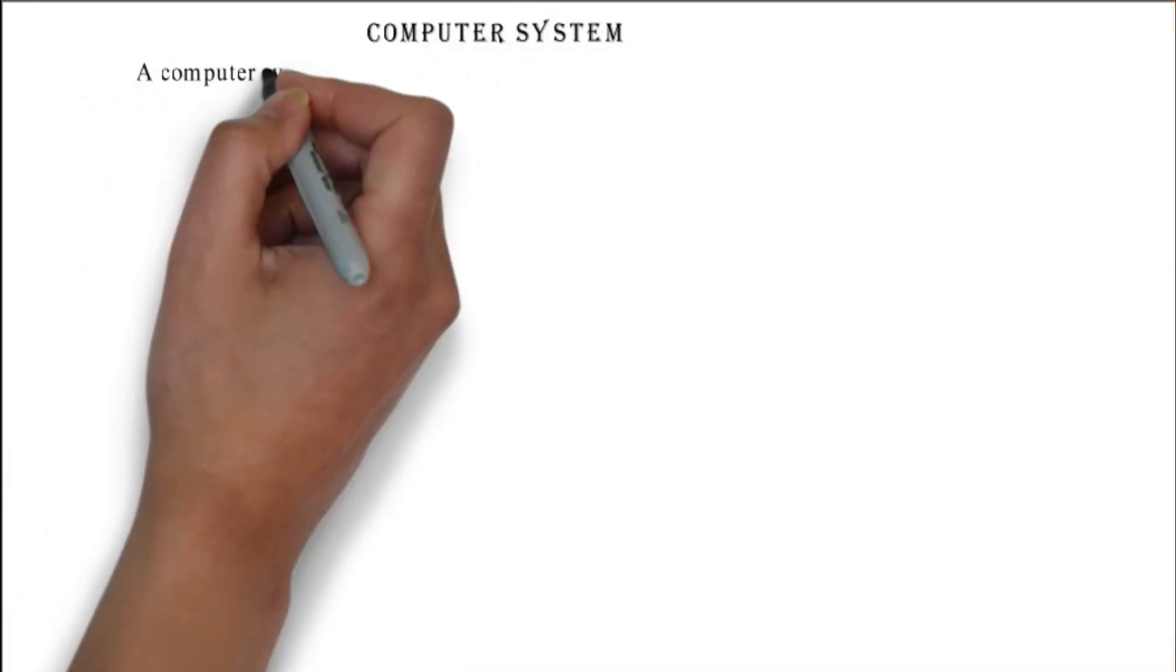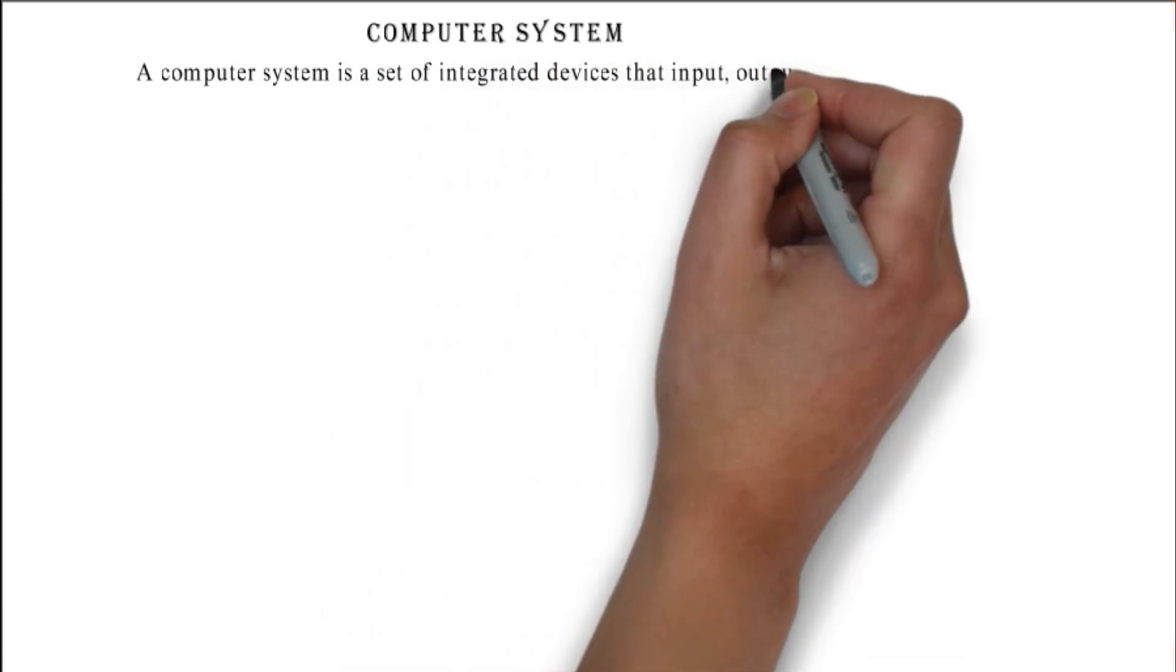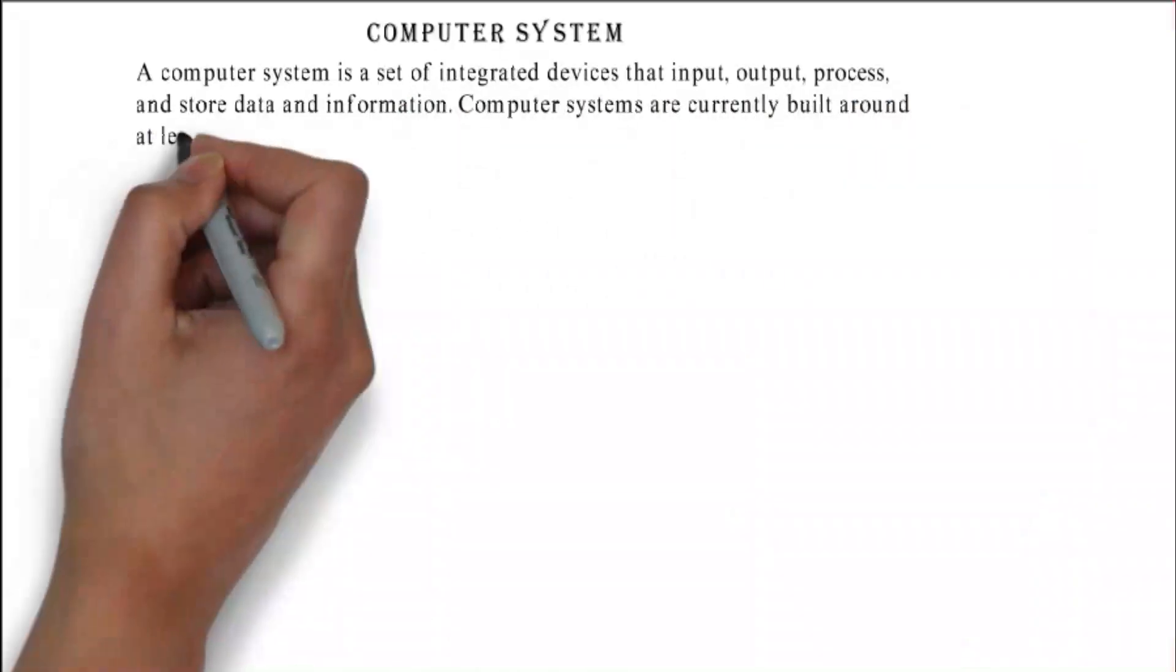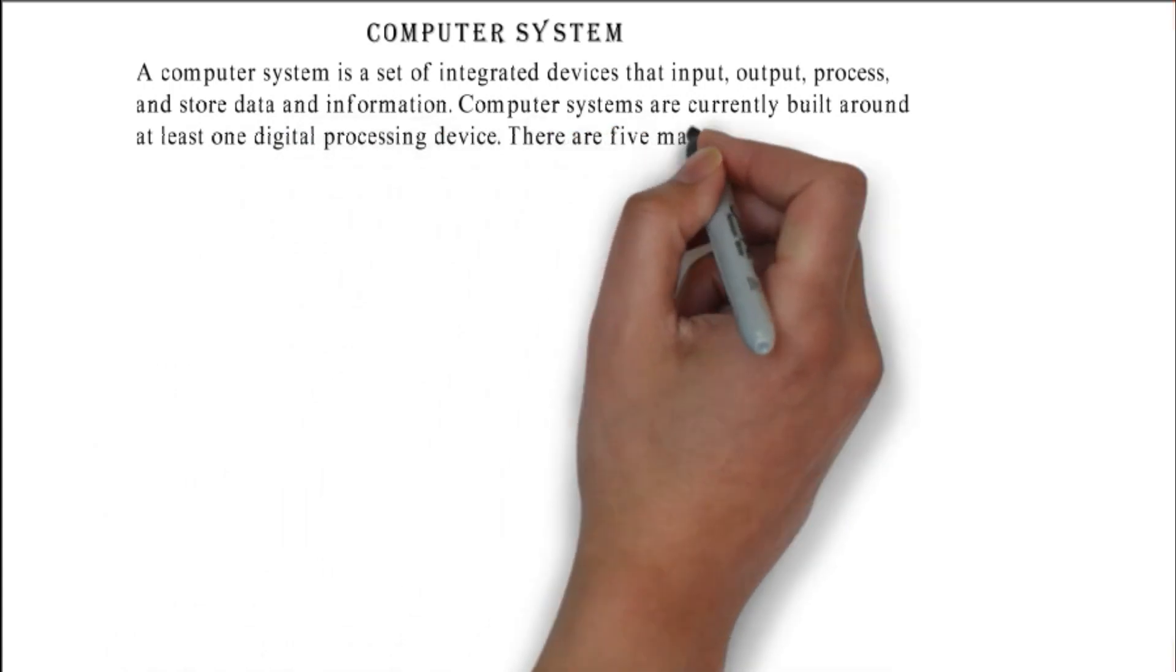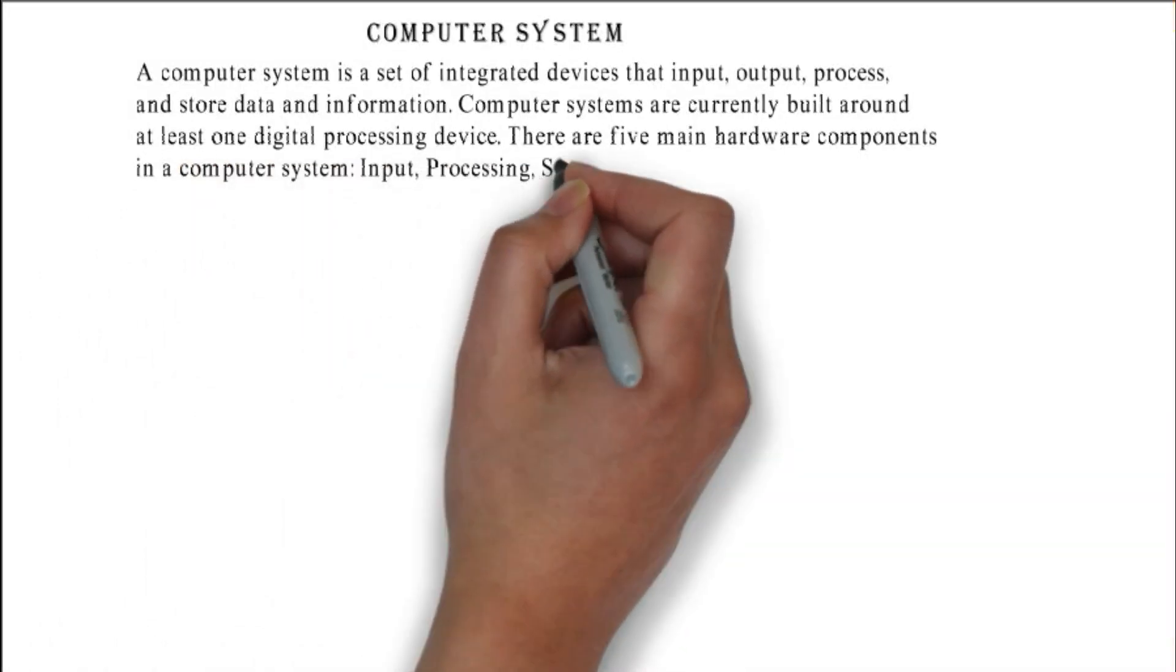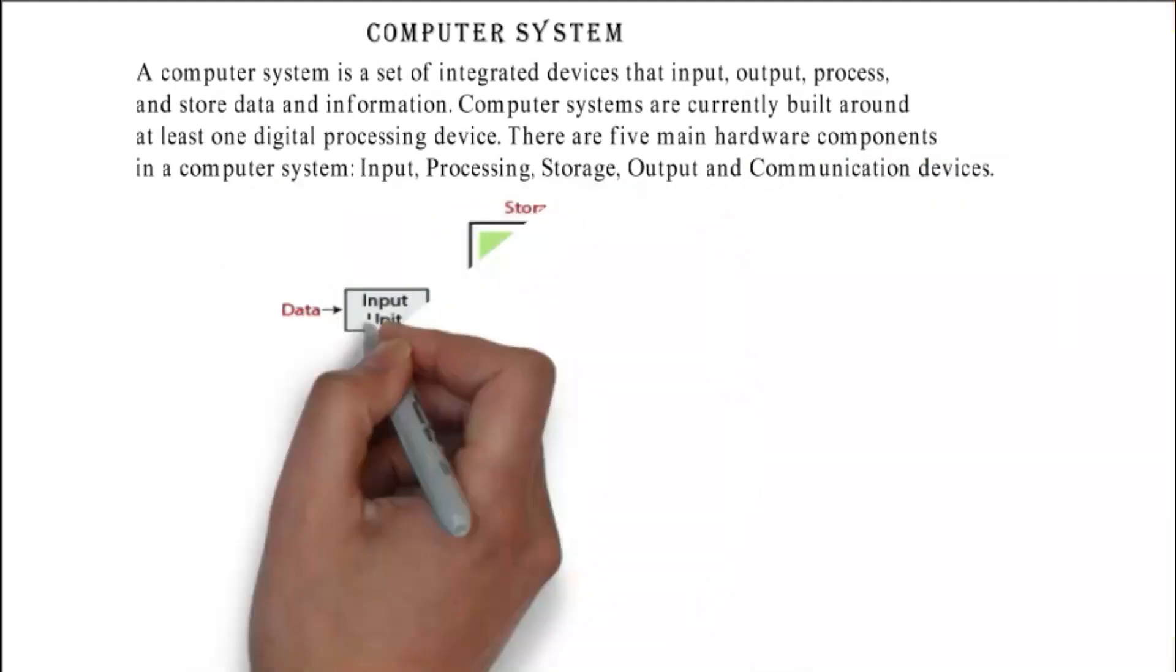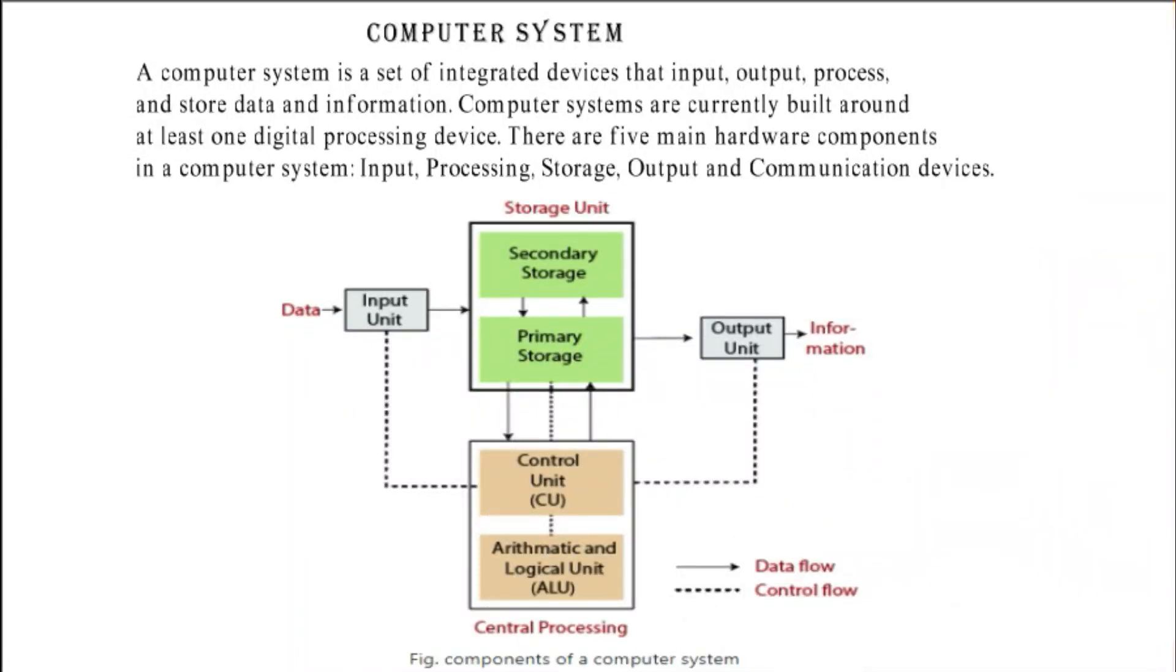Computer system: a computer system is a set of integrated devices that input, output, process, and store data and information. Computer systems are currently built around at least one digital processing device. There are five main hardware components in a computer system: input, processing, storage, output, and communication devices. You can see the block diagram of computer system with the working mechanism of its components.